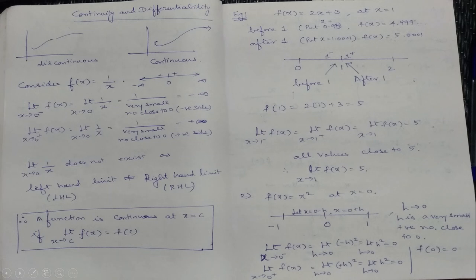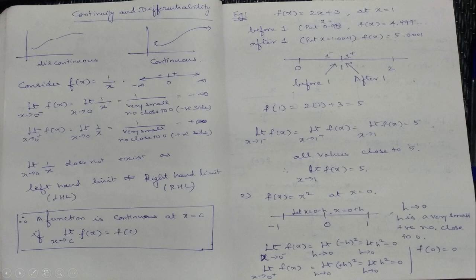For the right-hand limit, I put x = 1.001: f(1.001) = 2 × 1.001 + 3 = 5.001. You can see that the left-hand limit and right-hand limit are both revolving around the value 5. The value at x = 1 is f(1) = 2 × 1 + 3 = 5. We see that the left-hand limit equals the right-hand limit, so the value of the limit is 5, and it is also equal to f(1).